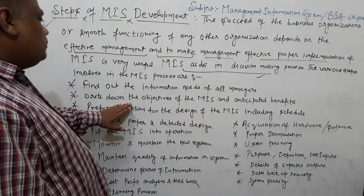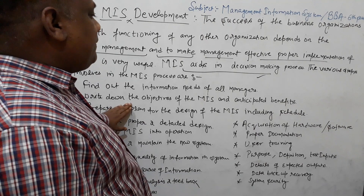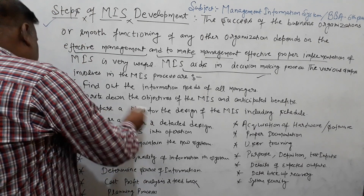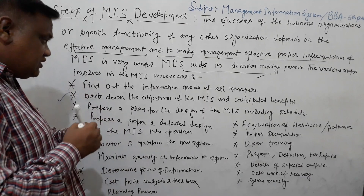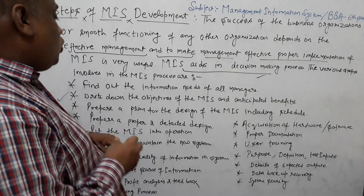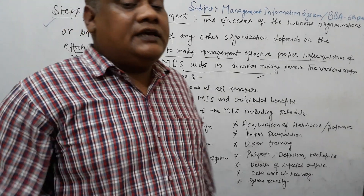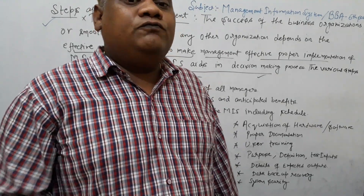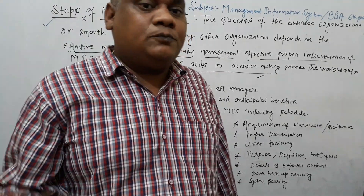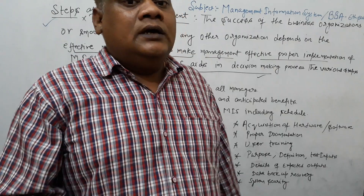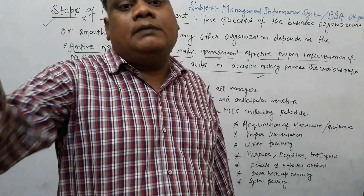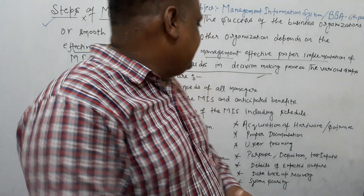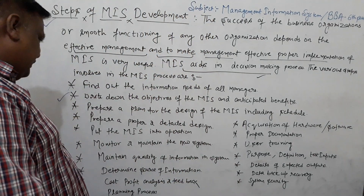Write down the objective of MIS and anticipated benefits. Most importantly, define what the MIS information system aims to do — what is our business, what is our strategy, where are we going in the future, where will we stand in the future, and what are our values and prospects.